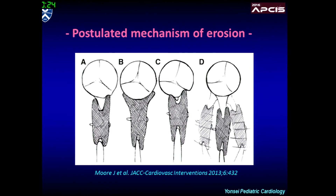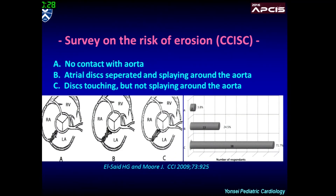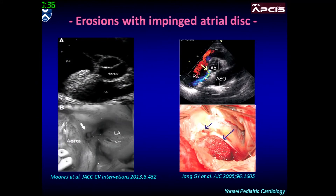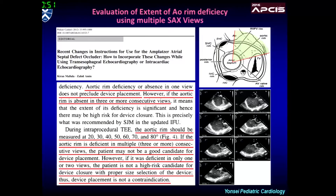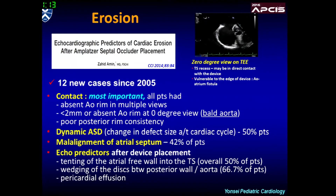Different mechanisms of erosion have been suggested, and many believe local encroachment of the atrial disc onto the aorta is a prerequisite for erosion. Malalignment of the septum is believed to be one of the important factors producing a risky condition for significant impingement of the atrial disc. In 2012, Zaid Amin published a paper regarding evaluation of aortic rim deficiency, which described that the true meaning of aortic rim deficiency is a deficiency of a broader area of the retro-aortic rim in multiple consecutive views from echo, not just in a single plane.